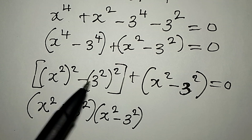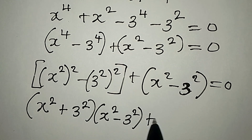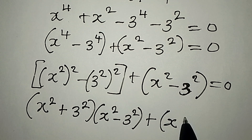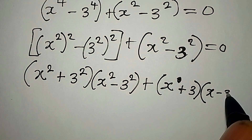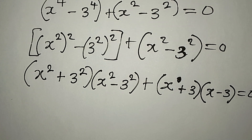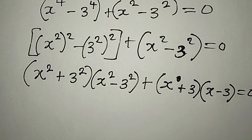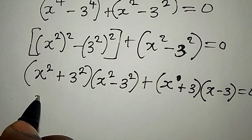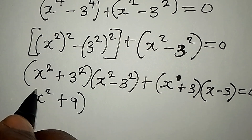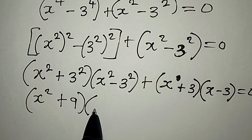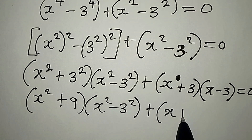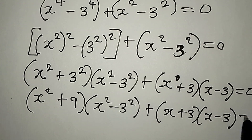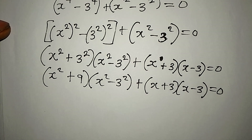Then for the other part, we're going to have x to the power of 2 — there's no need for the higher power again because we are using difference of two squares — this is positive 3, and then in the second bracket we have x minus 3, and this is equal to zero. So we are going to apply difference of two squares here too — we have x squared plus 9 in this bracket and in the second bracket x squared minus 3 to the power of 2, then plus open bracket x plus 3 into x minus 3, and this is equal to zero.